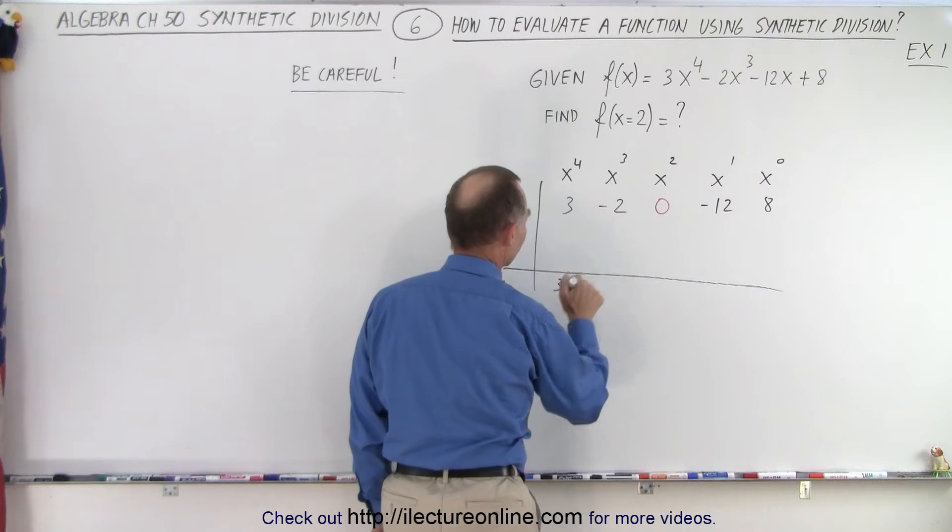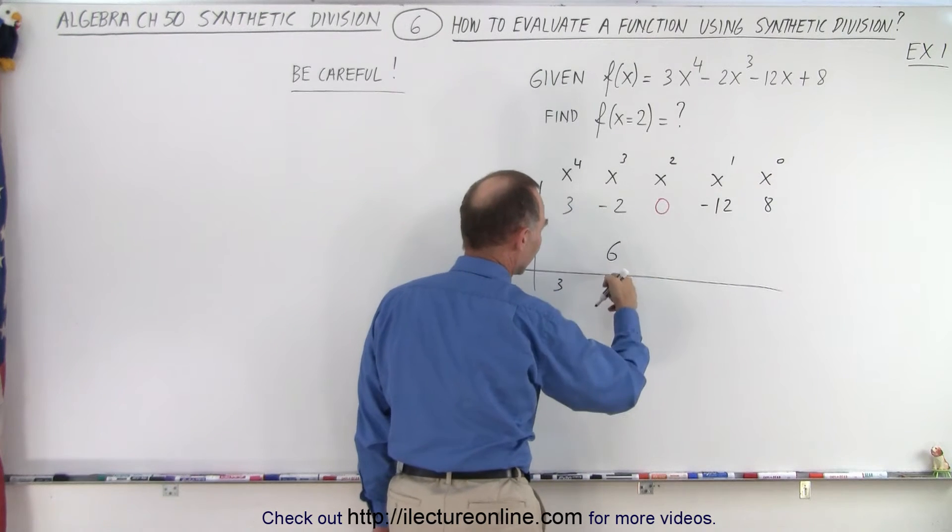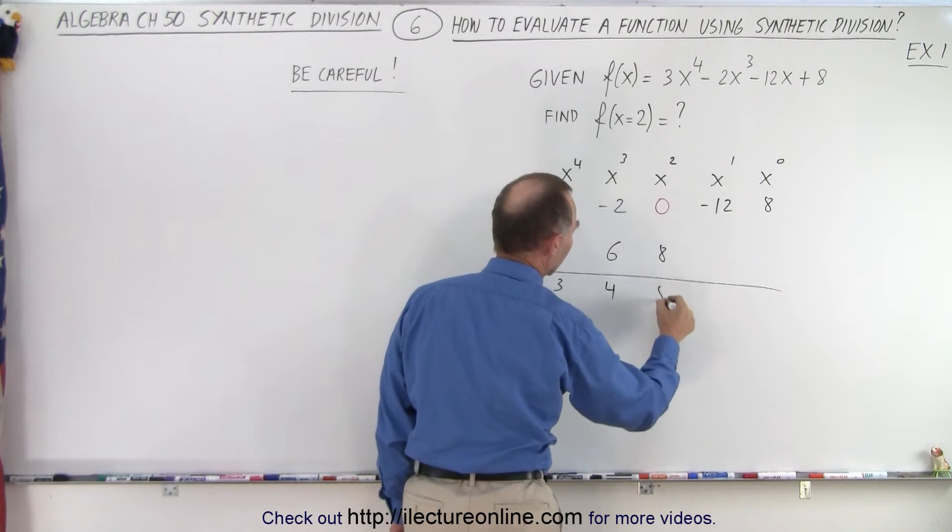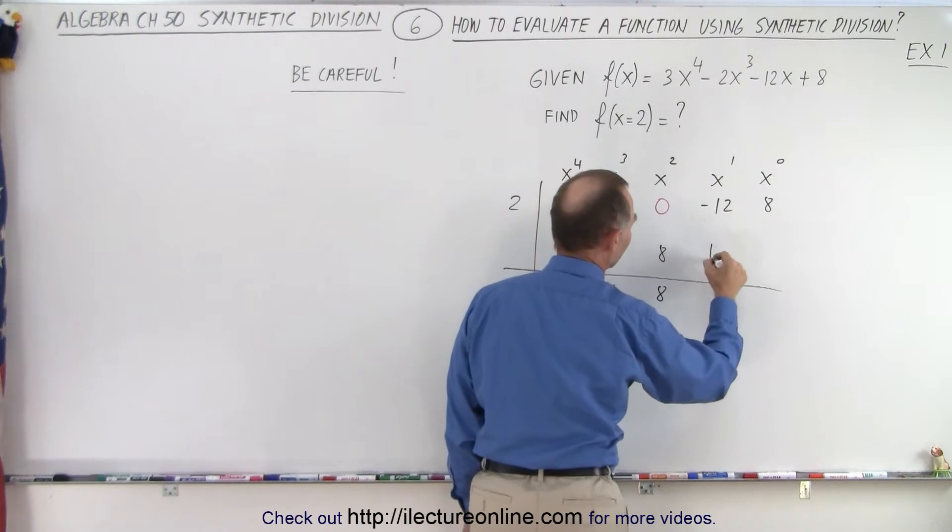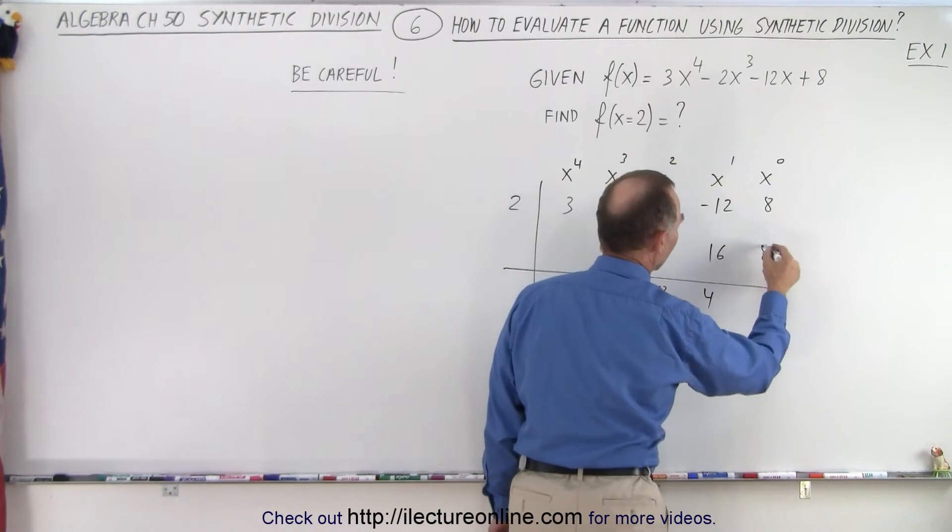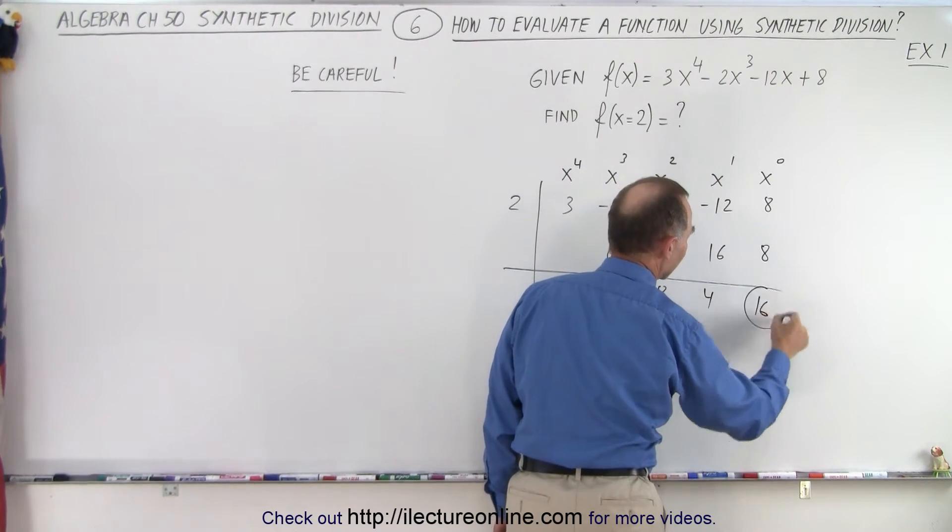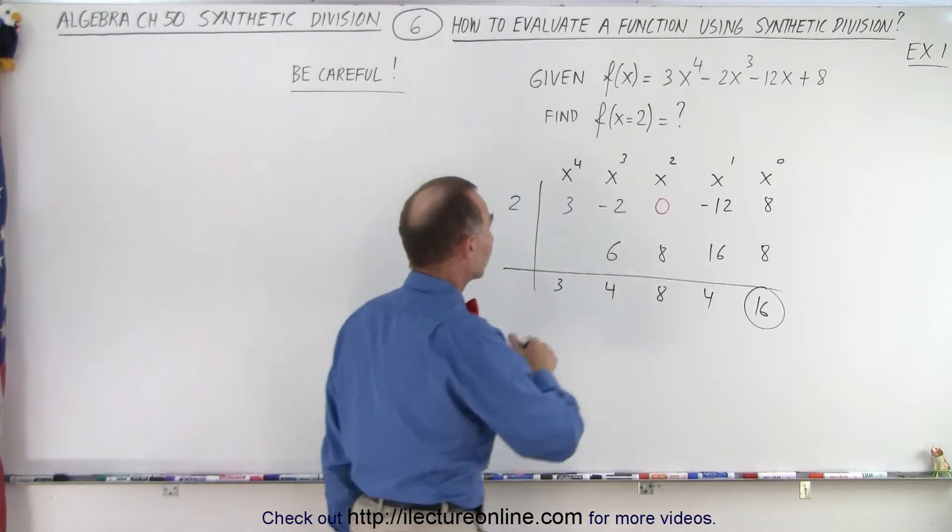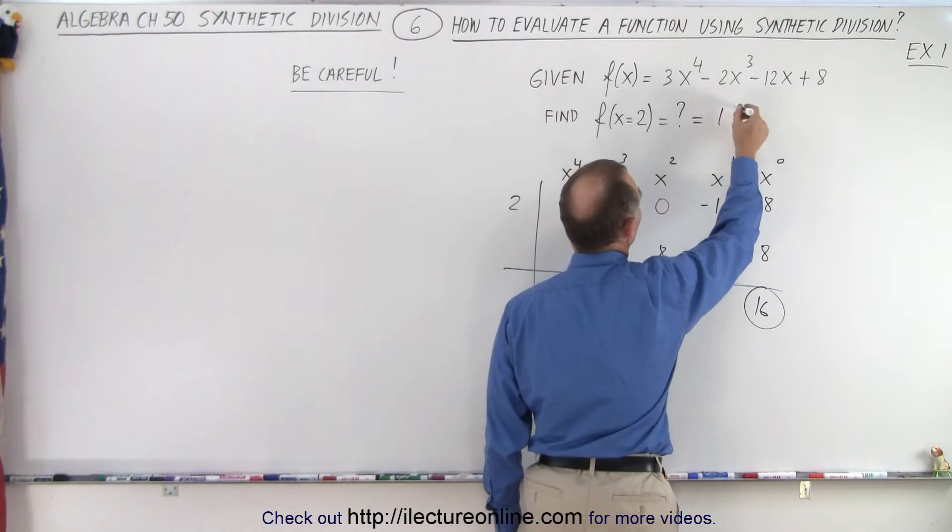All right. 2 times 3 is 6. You put the number 6 there. You add them together, you get 4. 2 times 4 is 8. Add them together, you get 8. 2 times 8 is 16. Add them together, you get 4. 2 times 4 is 8. Add them together, you get 16. And there's the solution. That's the number we get when we evaluate the function at x equals 2. It is equal to 16.